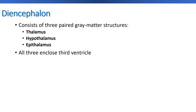The diencephalon is that purple region found deep inside the brain, sitting on top of the brain stem. In the diencephalon we see three paired gray matter structures. Gray matter tells us there's no myelination here — meaning we have interneurons and cell bodies. All three regions of the diencephalon have 'thalamus' in the name: one is simply the thalamus, one is the hypothalamus (meaning it's somewhere underneath the thalamus), and then there's the epithalamus (meaning it's somewhere above the thalamus).